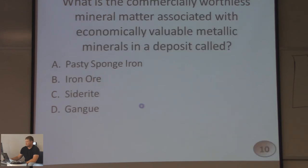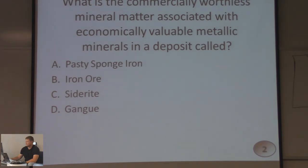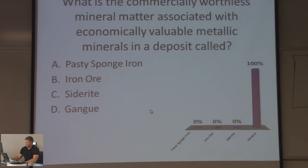What is a commercially worthless mineral matter associated with economically valuable metallic minerals in a deposit called? Pasty sponge iron, iron ore, cinderite, or gangue? You are 100% accurate if you chose gangue. And there's our star answer indicator.